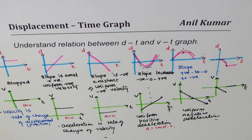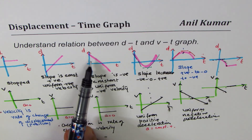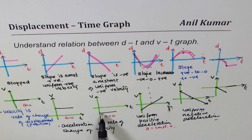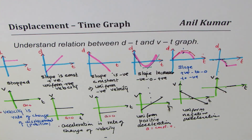That is how we can understand in one video how distance-time and velocity-time graphs are related and what terms we use to describe them. For example, constant uniform negative velocity means a downward-sloping displacement graph with zero acceleration. I'm Anil Kumar — I hope that helps. Feel free to share, subscribe, and like my videos. Thank you and all the best.